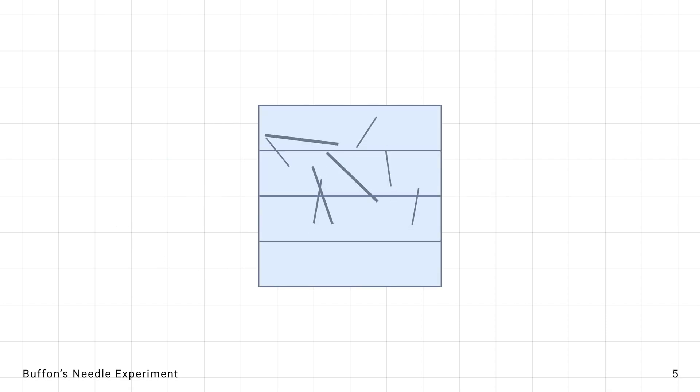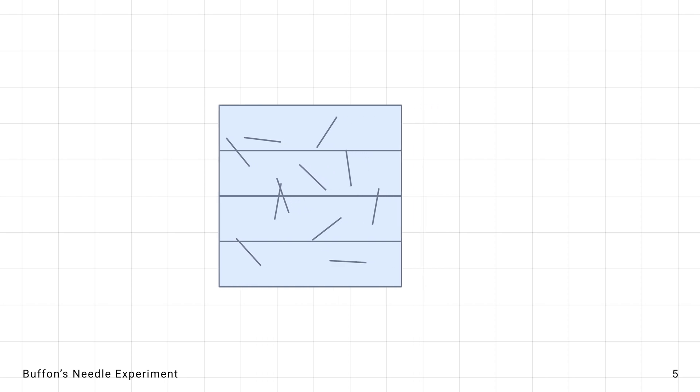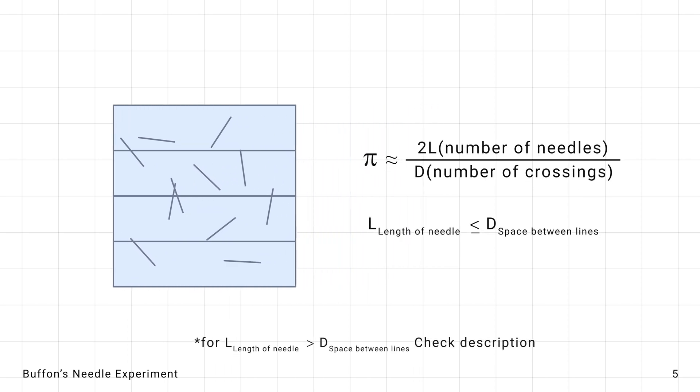By dropping needles on a lined surface, the probability of a needle crossing a line is directly linked to pi. This experiment blends geometry with probability in a fun way.